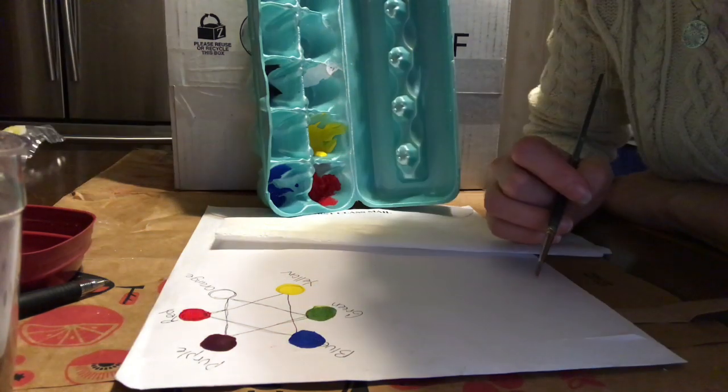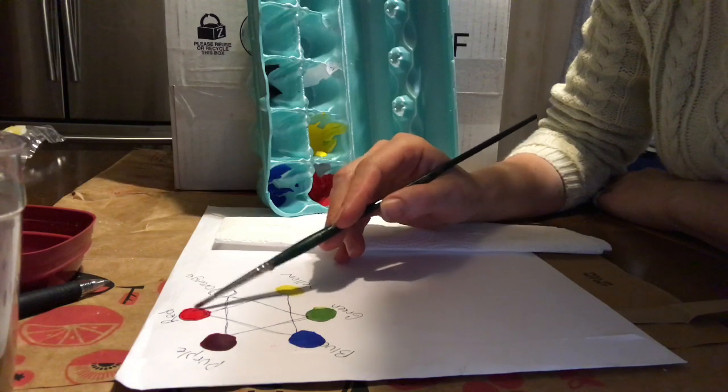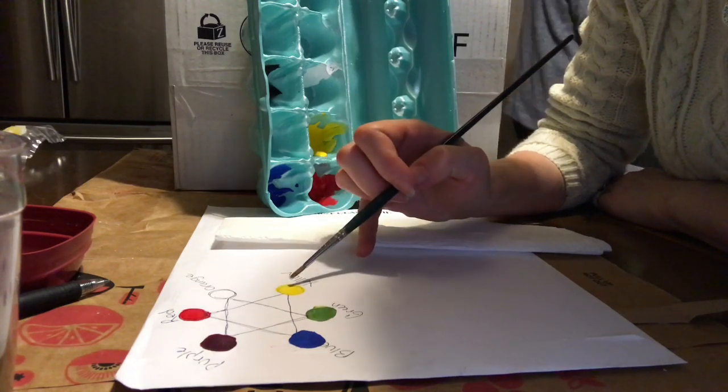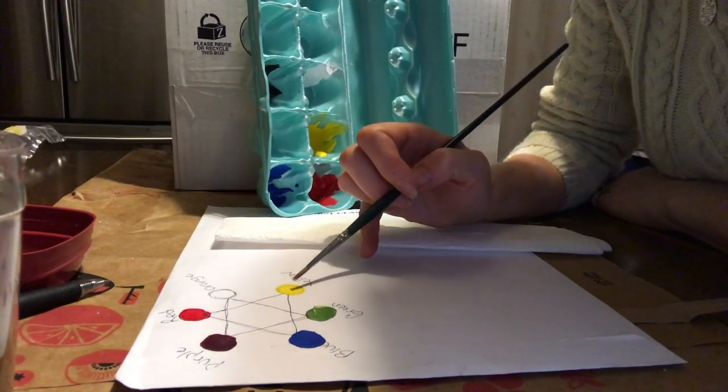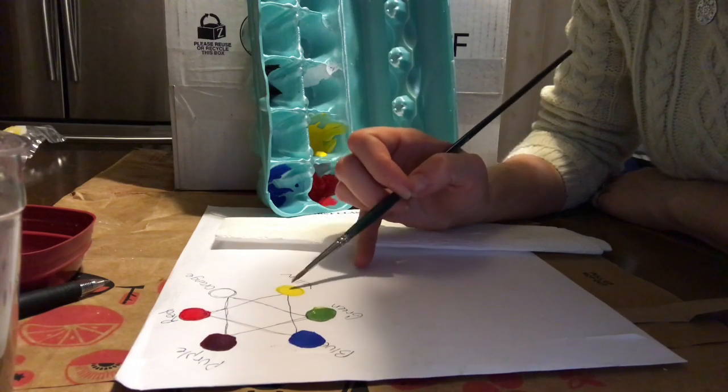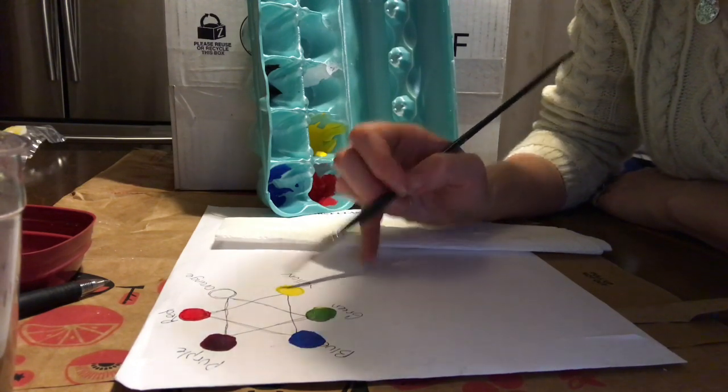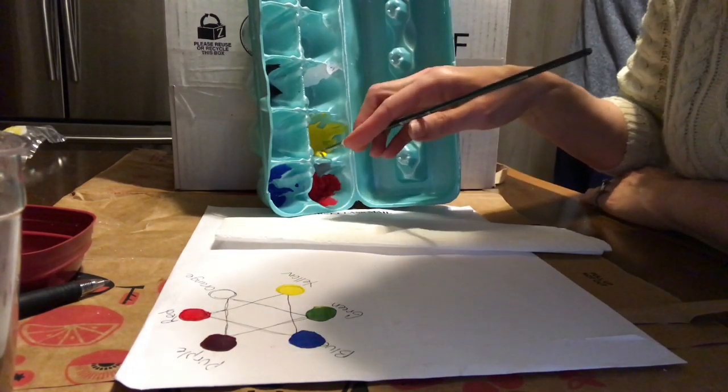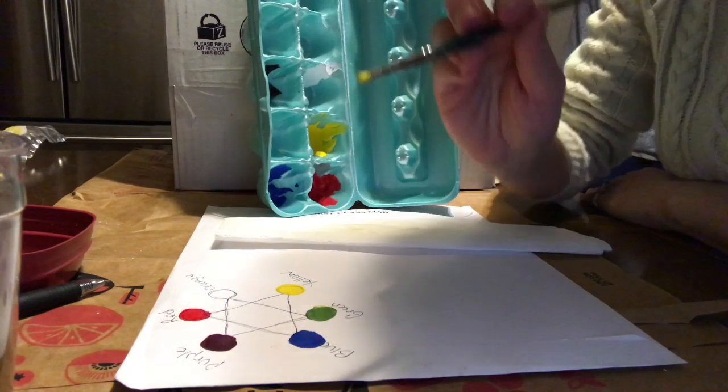Now we're going to mix the orange. Again, the red is super strong and the yellow is very pale, so it's only going to take a little bit of red to make yellow turn orange. I'm going to start with my yellow. Always start with your less dominant color.